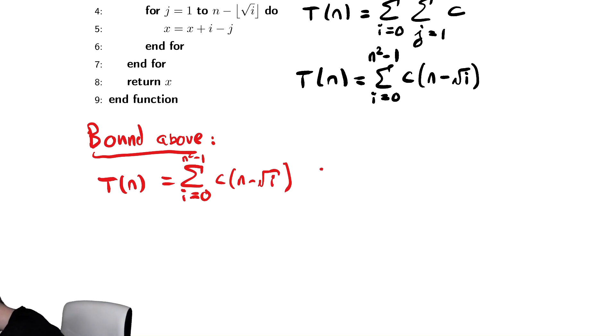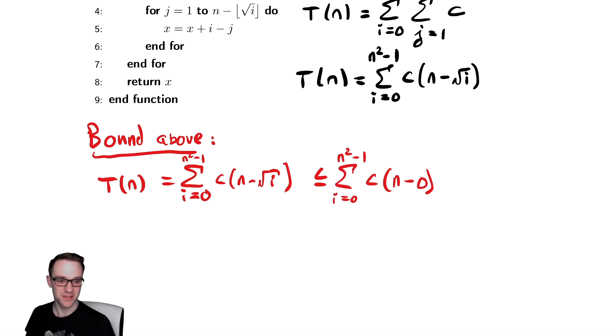So this is less than or equal to the value of i I'm going to plug in is going to be the bottom bound, which is 0. So this is c, then n minus 0. Radical 0, which is 0.